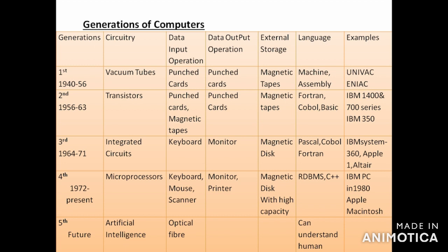Next is the Generations of Computers — how year by year changes were made in computer technology. You must remember the time periods: the first generation was 1942 to 1956, the third generation was 1964 to 1971, the fourth generation is 1972 to the present, and the fifth generation is the future generation yet to come. Prepare a table to memorize these time periods and learn them by heart.